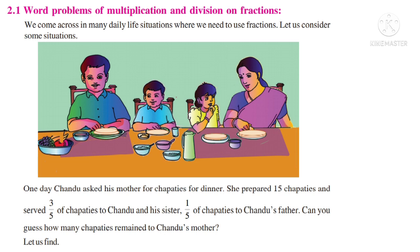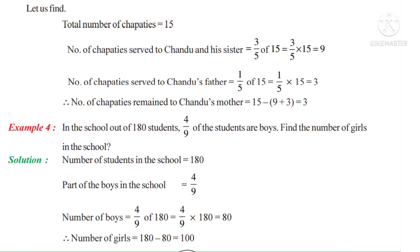One day Chandu asked his mother for chapatis for dinner. She prepared 15 chapatis and served 3 by 5th of chapatis to Chandu and his sister, and 1 by 5th of chapatis to Chandu's father. Can you guess how many chapatis remain for Chandu's mother? Let us find. Here observe the word 'of' — it indicates multiplication.